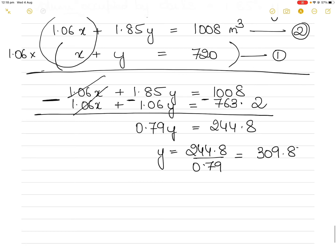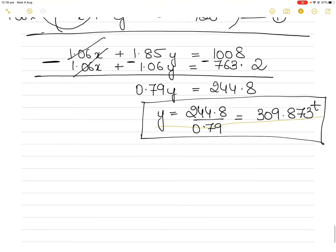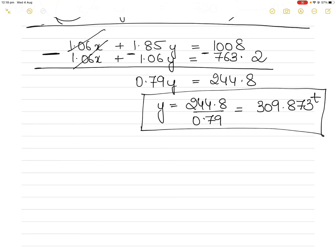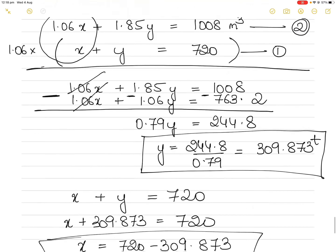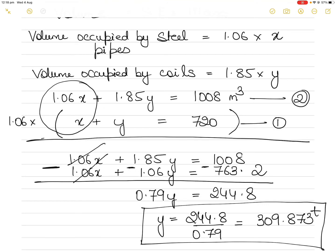We've found y = 309.873 tons of wire rod coils. Substituting back into Equation 1: x + 309.873 = 720, so x = 720 − 309.873 = 410.127 tons of steel pipes. Note: if you had chosen to eliminate y instead, you would multiply Equation 1 by 1.85, making the y values equal, and then cancel — you would get the same answer either way.